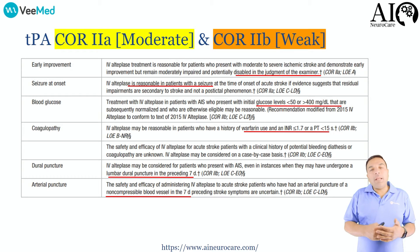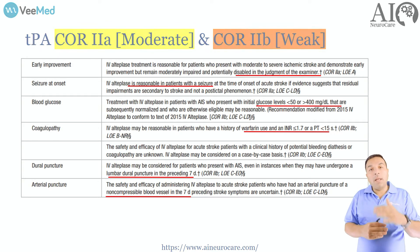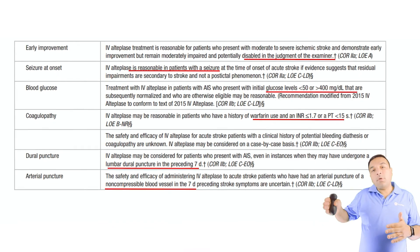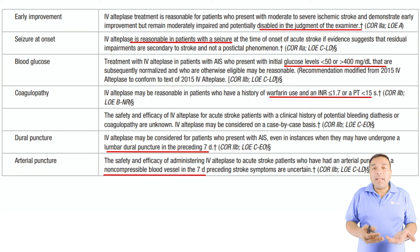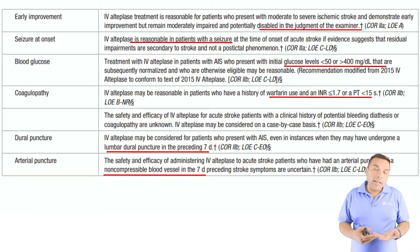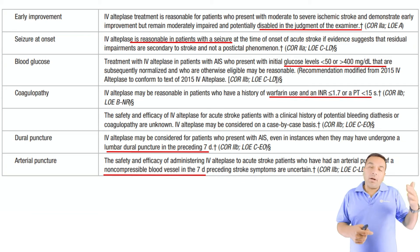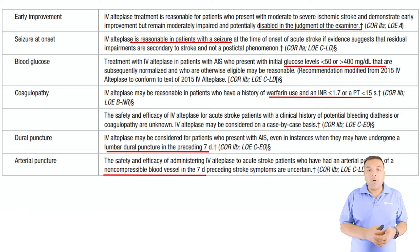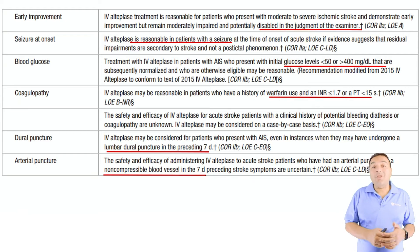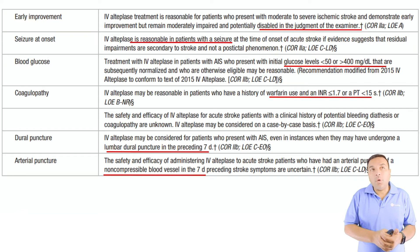In situations where the patient is showing some early improvement but you still think the improvement may not be sufficient, or you have insight that the patient could have neurological deterioration, it is reasonable to give TPA. The class of recommendation is 2a — a moderate recommendation to go ahead and give TPA.